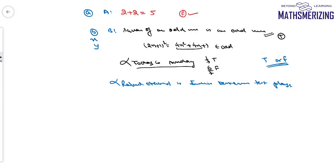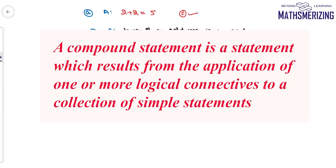In mathematical reasoning there is a provision where we can group or combine several statements to form a new statement. We do that by using something called connectives. Connectives combine two or more statements to form more complicated or more profound statements called compound statements. The first connective we will study is the AND connective, or simply conjunction.